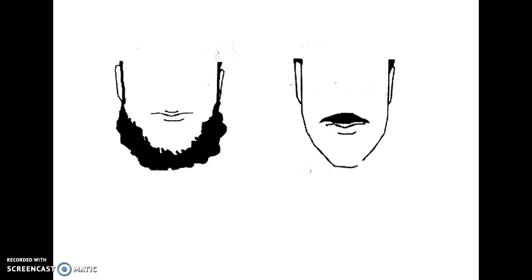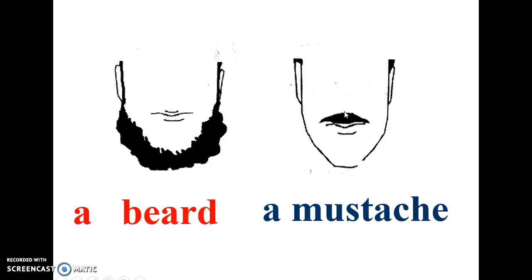Now we have another adjective that can be useful when describing a person. Here we can see this is called, in English, beard. If a man has a beard, we can say he has a beard. And here, a mustache - this is the mustache. He has a mustache. He has a beard. Does your father have a beard? Does your father have a mustache?